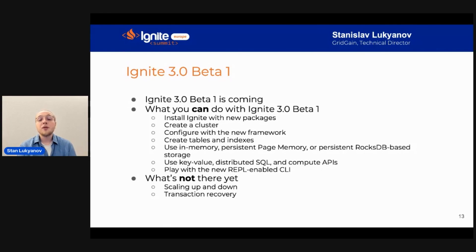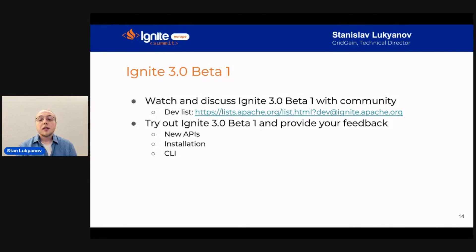Beta 1 is not a production-ready release, of course. For example, it doesn't have scaling up and down capabilities or transactional recovery, and it generally works best on a stable topology. You can do all the experimentation you need, but not take it to production yet. You can join the discussion of Apache Ignite 3 Beta 1 on the community developer list — download and try it out, and provide feedback on the new APIs, installation, and CLI. Developers in the community will be able to use this valuable feedback in further iterations of Apache Ignite 3 development.